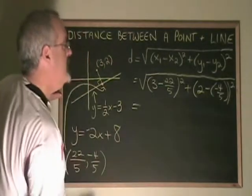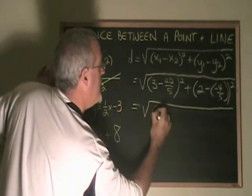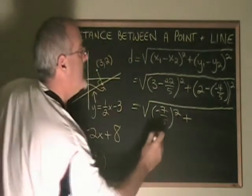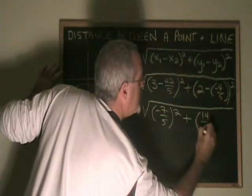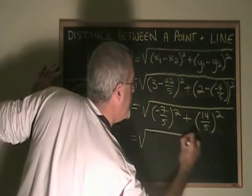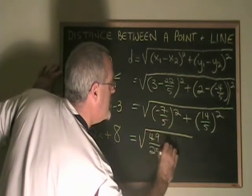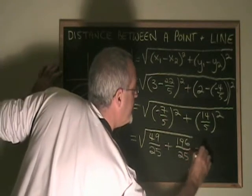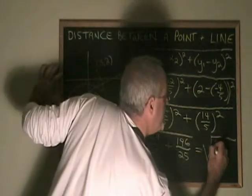which simplifies to give us negative 7 fifths squared, plus 14 fifths squared, which is the square root of 49 over 25, plus 196 over 25, which is the square root of 244 over 25.